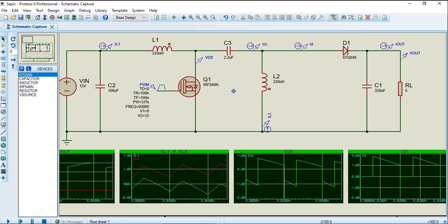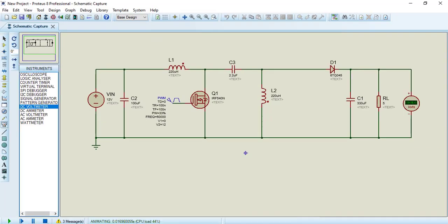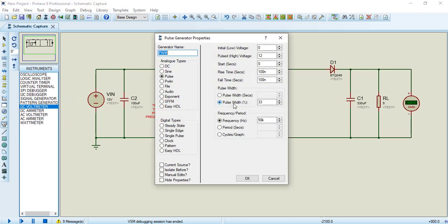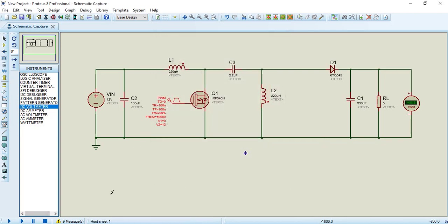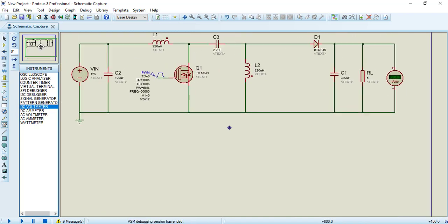Now let's see Proteus simulation of SEPIC converter in boost mode. For that, open PWM signal, and make setting of duty cycle equal to 58%. Also set other values as shown in PWM window. After that, click on Proteus simulation play button. As you can see, the output voltage is about 5 volts.